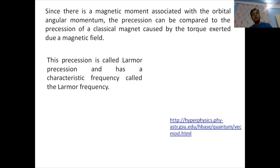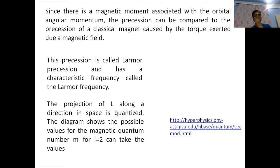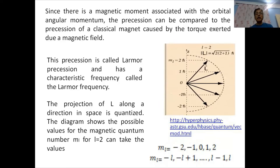Since there is a magnetic moment associated with the orbital angular momentum, the precession can be compared to the precession of a classical magnet caused by the torque exerted by a magnetic field — just like a small magnet in a magnetic field feels a torque. This precession is called the Larmor precession and has a characteristic frequency called the Larmor frequency. The projection of the angular momentum L along a direction in space is quantized. This diagram shows the possible values of magnetic quantum number m_l for l = 2.